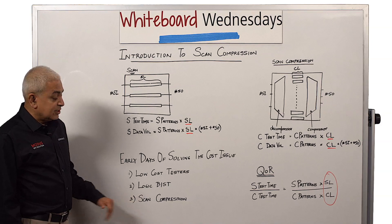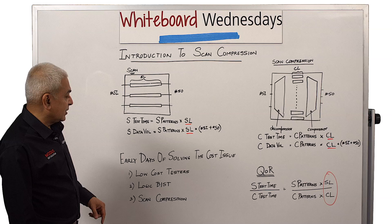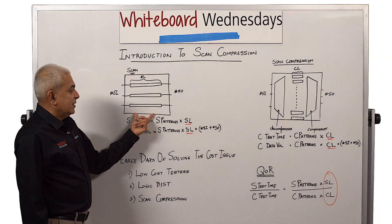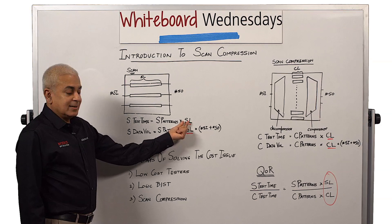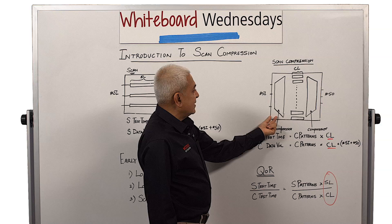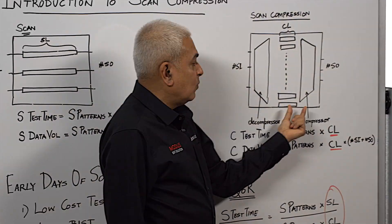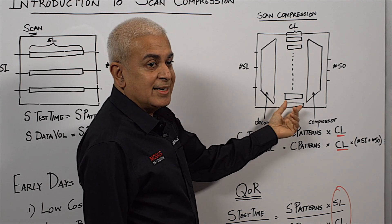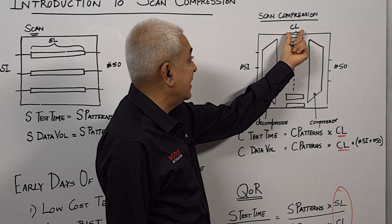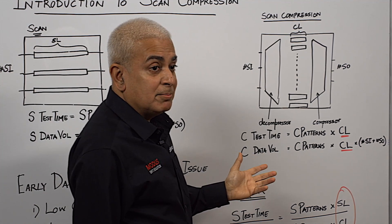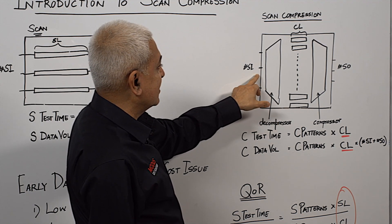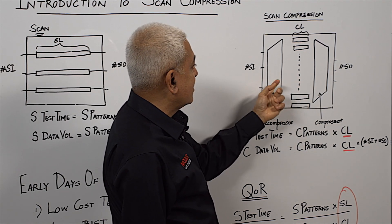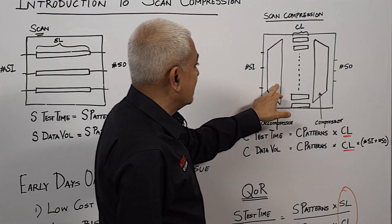The final solution which actually got adopted was scan compression. I'm going to now introduce you to scan compression. This was introduced by the EDA vendors. To solve this test cost issue, the chain lengths were recognized as the real problem. So what was done is that the chains were decoupled from the scan-in and the scan-out. Once you decouple the scan chains from the scan-ins and scan-outs, you're able to create many more smaller chains, and hence the chain lengths have now reduced — marked here as CL, compressed chain length. The problem then becomes adding some logic to interface the few scan-ins to the many chains and the few scan-outs to the many chains to get the responses. This logic is called the codec, which represents the decompressor and the compressor.